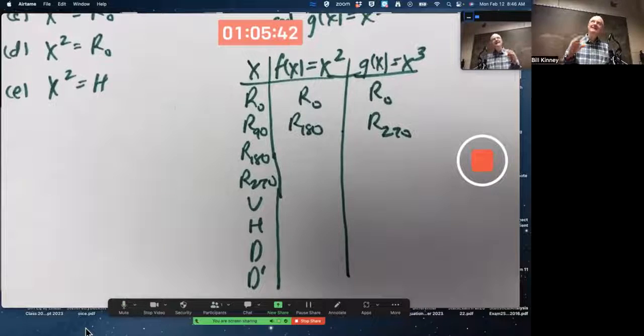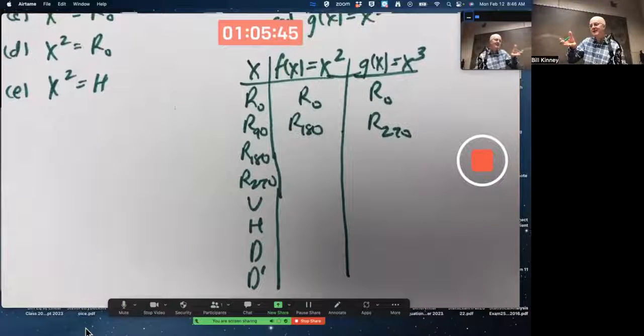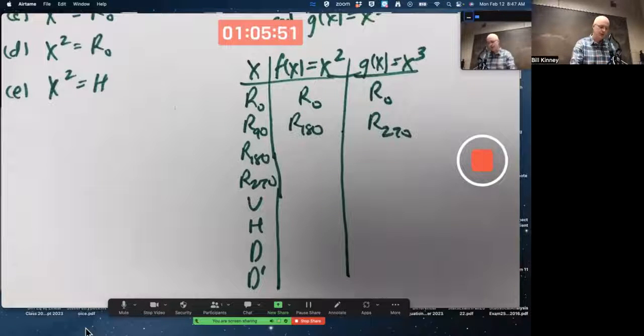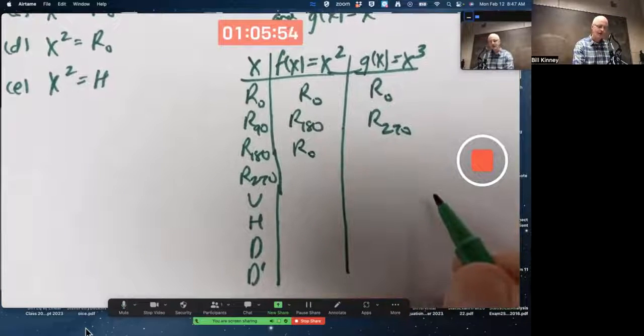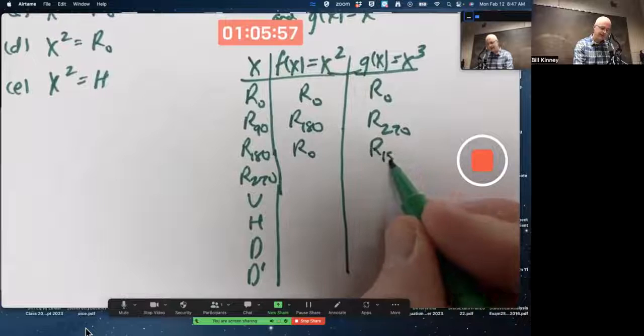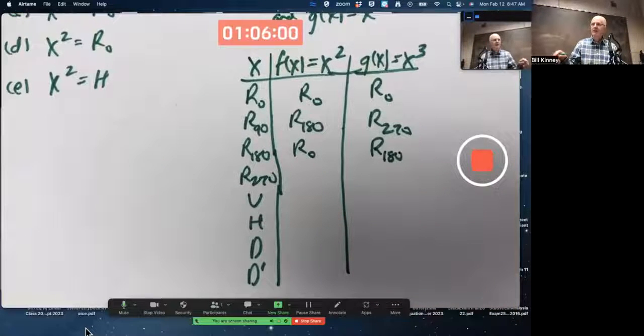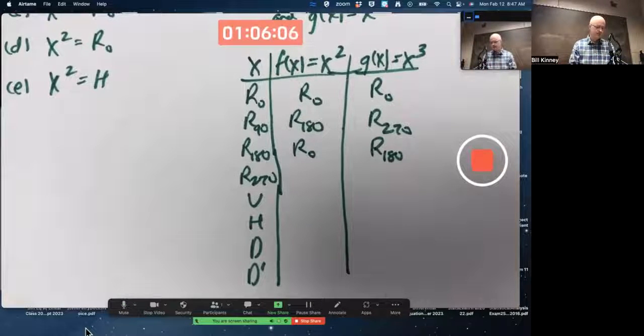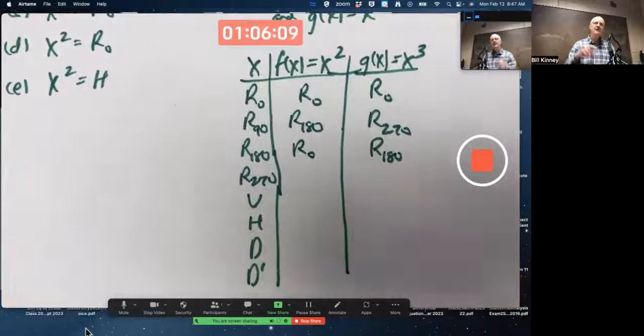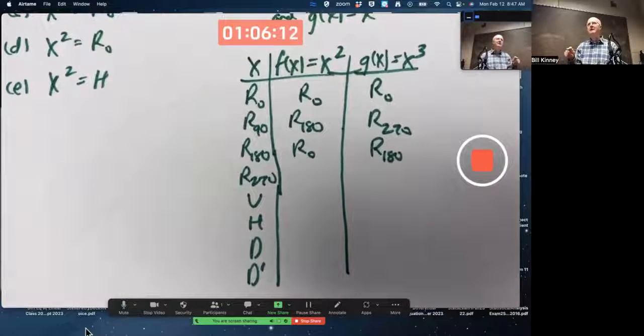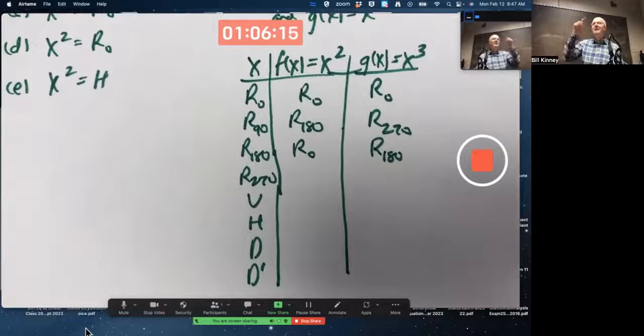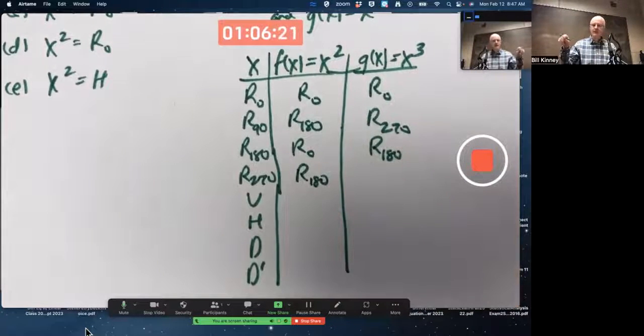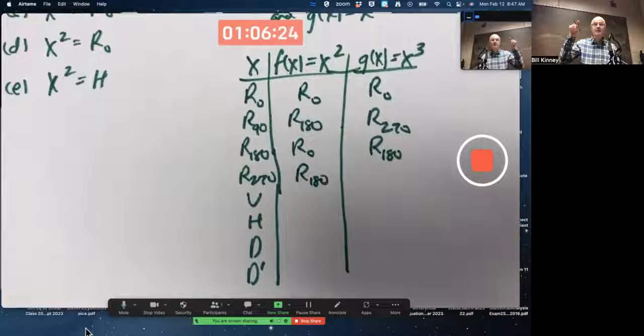R180, when you square it, 180 degree rotation followed by another 180 degree rotation gets you back to where you started. It's equivalent to a zero rotation, that's R0. When you cube it, it's effectively itself. Doing 180 degree rotation three times, the net effect is the same as just one 180 degree rotation. R270, rotating counterclockwise by 270 degrees once and then again is equivalent to 180 degrees. And doing it one more time, 270 degrees, brings you back to something equivalent to 90 degree rotation.